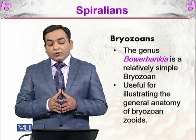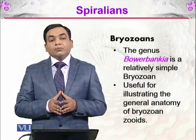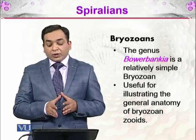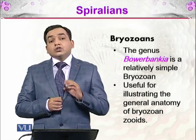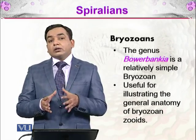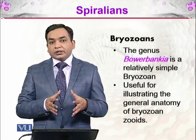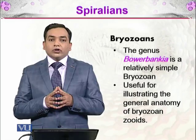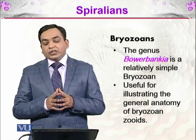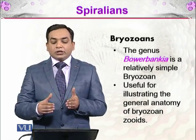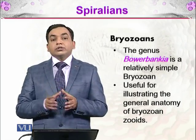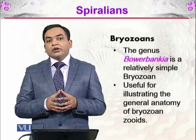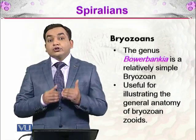The genus Bowerbankia is a relatively simple bryozoan and is used for illustrating the general anatomy of bryozoan zoids. As we have discussed, the bryozoans are colonial — they make colonies. The unit of a colony is called a zoid, so whenever we discuss individual bryozoans, we will be talking about the zoids.